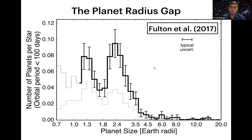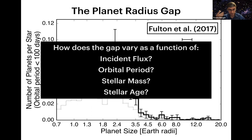Now that we have all these new stellar properties, what can we learn about the planet population? I want to give background on the planet radius gap from Fulton et al. 2017 — a plot of number of planets per star versus planet size. The major discovery is a gap in the distribution of radii for small planets, separating super-Earths at about 1.3 Earth radii from sub-Neptunes at about 2.4 Earth radii. This discovery was made possible by the very precise stellar properties from the California Kepler Survey.